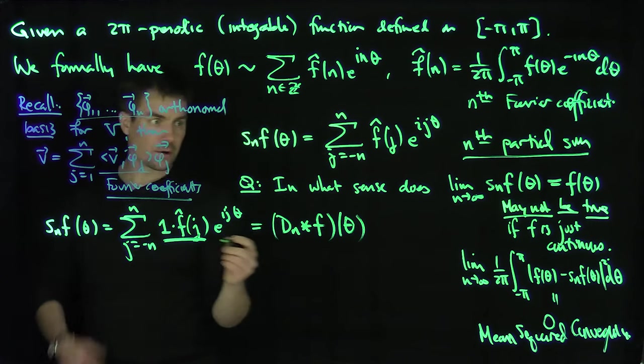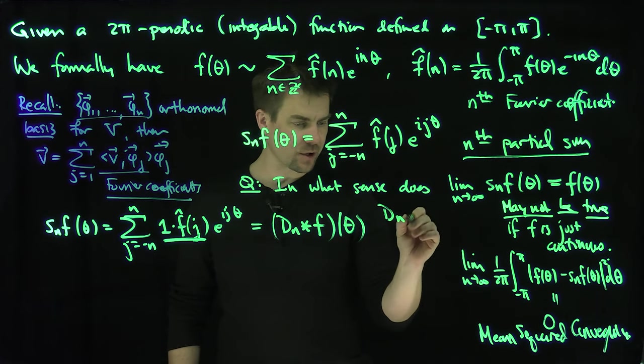with Dₙ and θ, because we'll remember what this Dirichlet kernel is here. So Dₙ, of course, is the Dirichlet kernel.